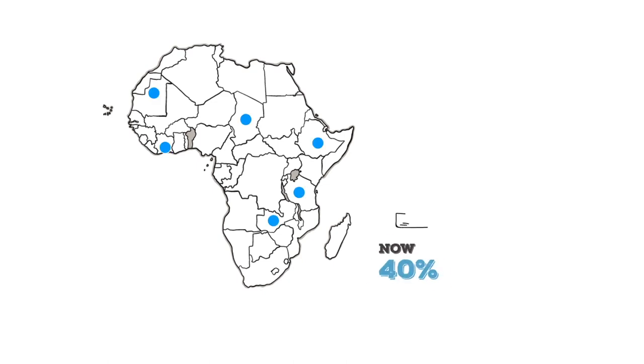Today, 40% of Africans live in cities. By 2030, this number is expected to increase to 50%, and 70% by 2050.